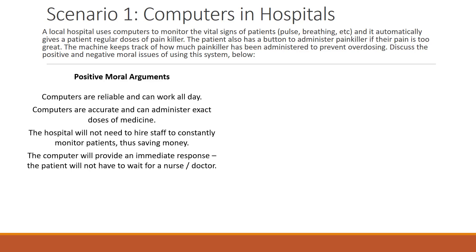Let's look at the positives first. Computers are reliable and they can work all day, whereas a human can't. Computers are accurate and they can administer exact doses of medicine; humans, by comparison, can make mistakes. The hospital wouldn't need to hire as many staff to constantly monitor the patient, which would save them money. The computer system can monitor patients 24-7, while staff have to pop in and out on rare occasions. Also, the computer will provide an immediate response, so the patient will not have to wait for a nurse or a doctor.